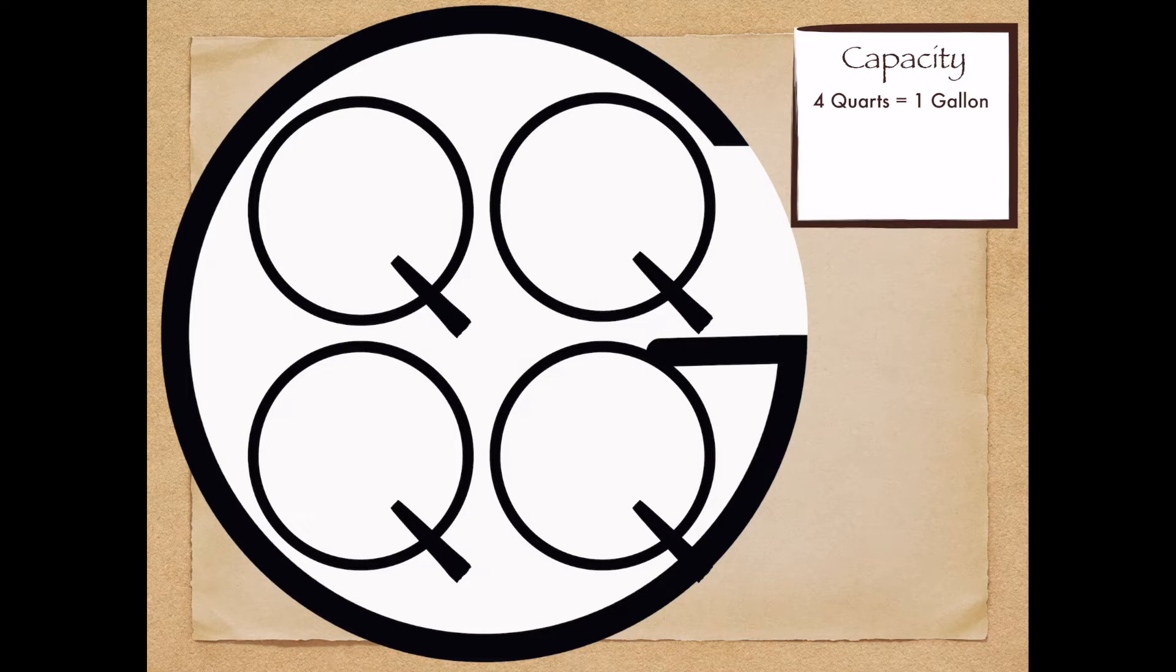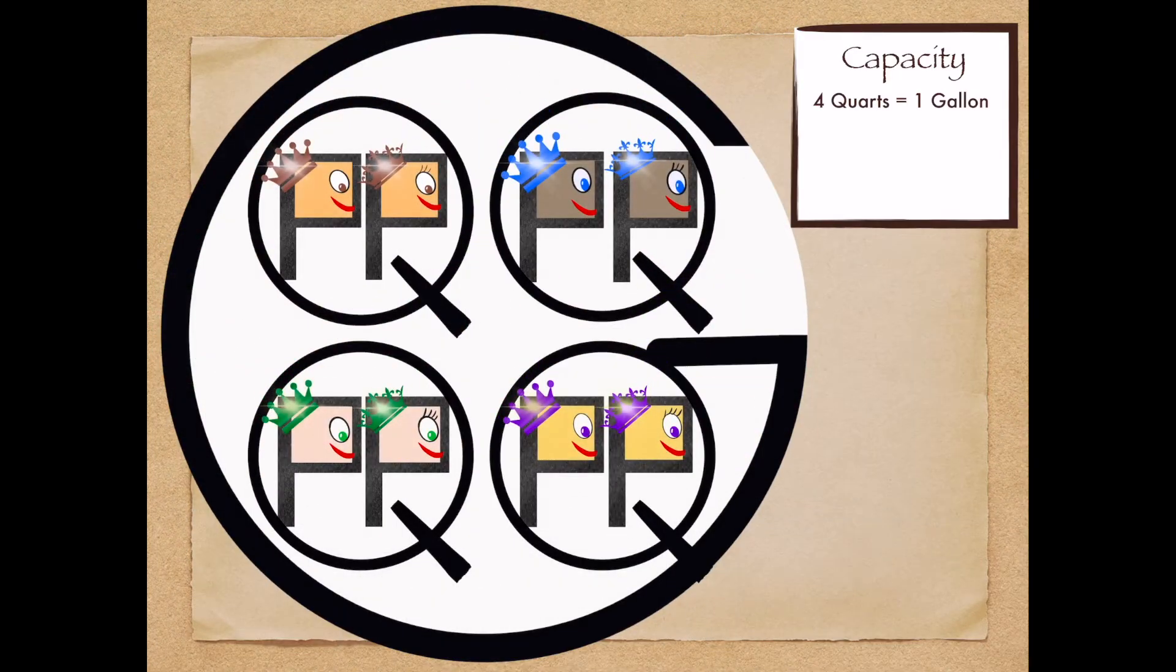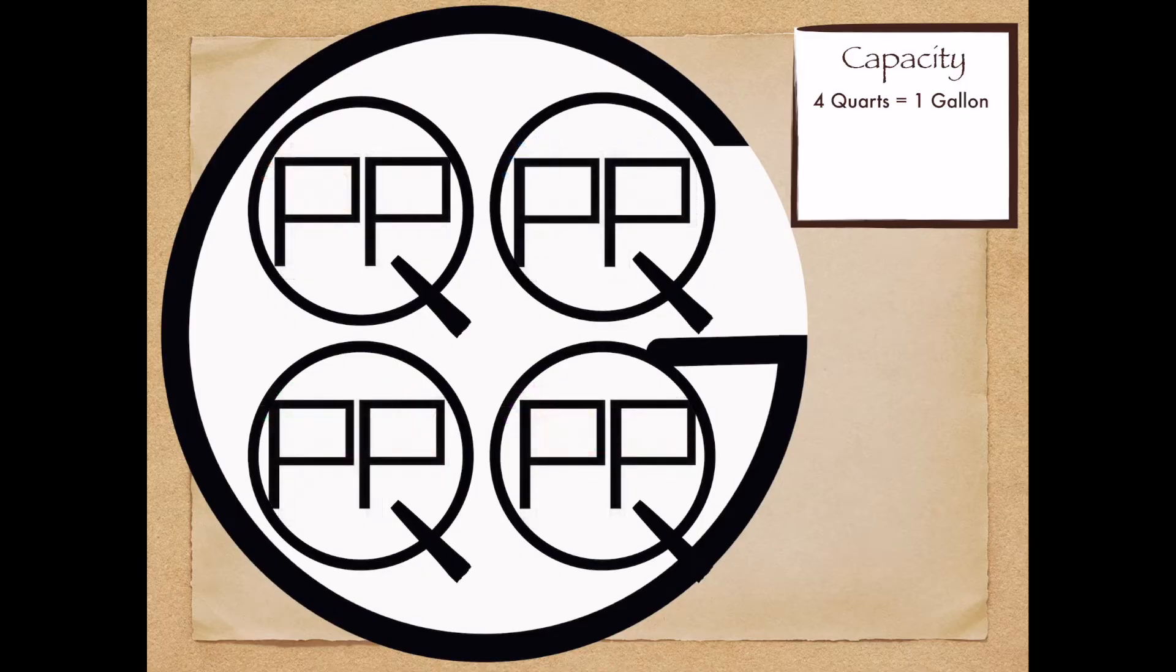How many princes and princesses did each queen have? Each queen had a prince and a princess. And the P in prince and princess stands for pints. There are two pints in each quart.